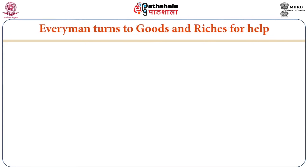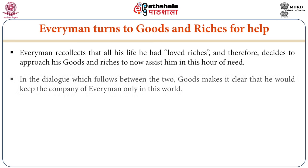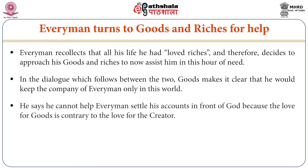Everyman then turns to Goods for help. He recollects that all his life he had loved riches, and so decides to approach his Goods and Riches to assist him in his hour of need. In the dialogue which follows, Goods makes it clear that he would keep the company of Everyman only in this world. Goods says he cannot help Everyman settle his accounts before God, because the love for goods is contrary to the love for the creator.